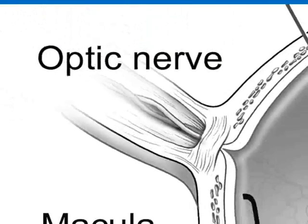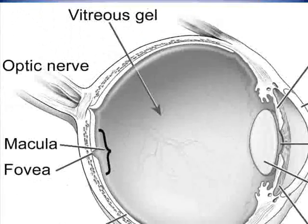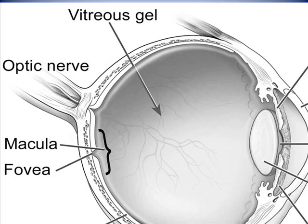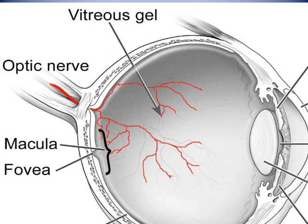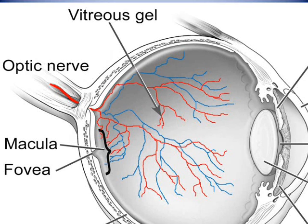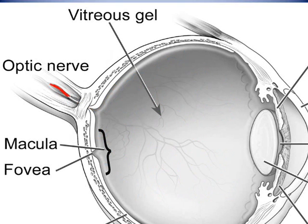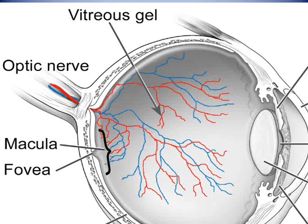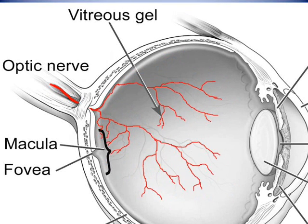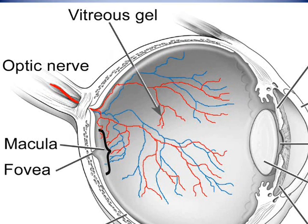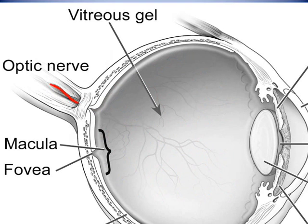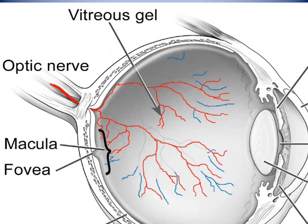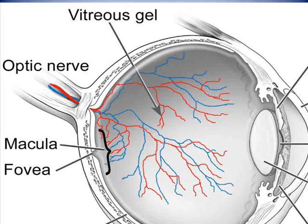The central retinal artery and the central retinal vein access the eye through a narrow channel in the optic nerve. As the central retinal artery enters the back of the eye, it branches into smaller vessels until blood reaches almost all areas of the retina's surface. After the blood has made its way through the capillaries and delivered its nutrients and oxygen to the surface layers of the retina, the blood leaves the eye through a similar system of veins.